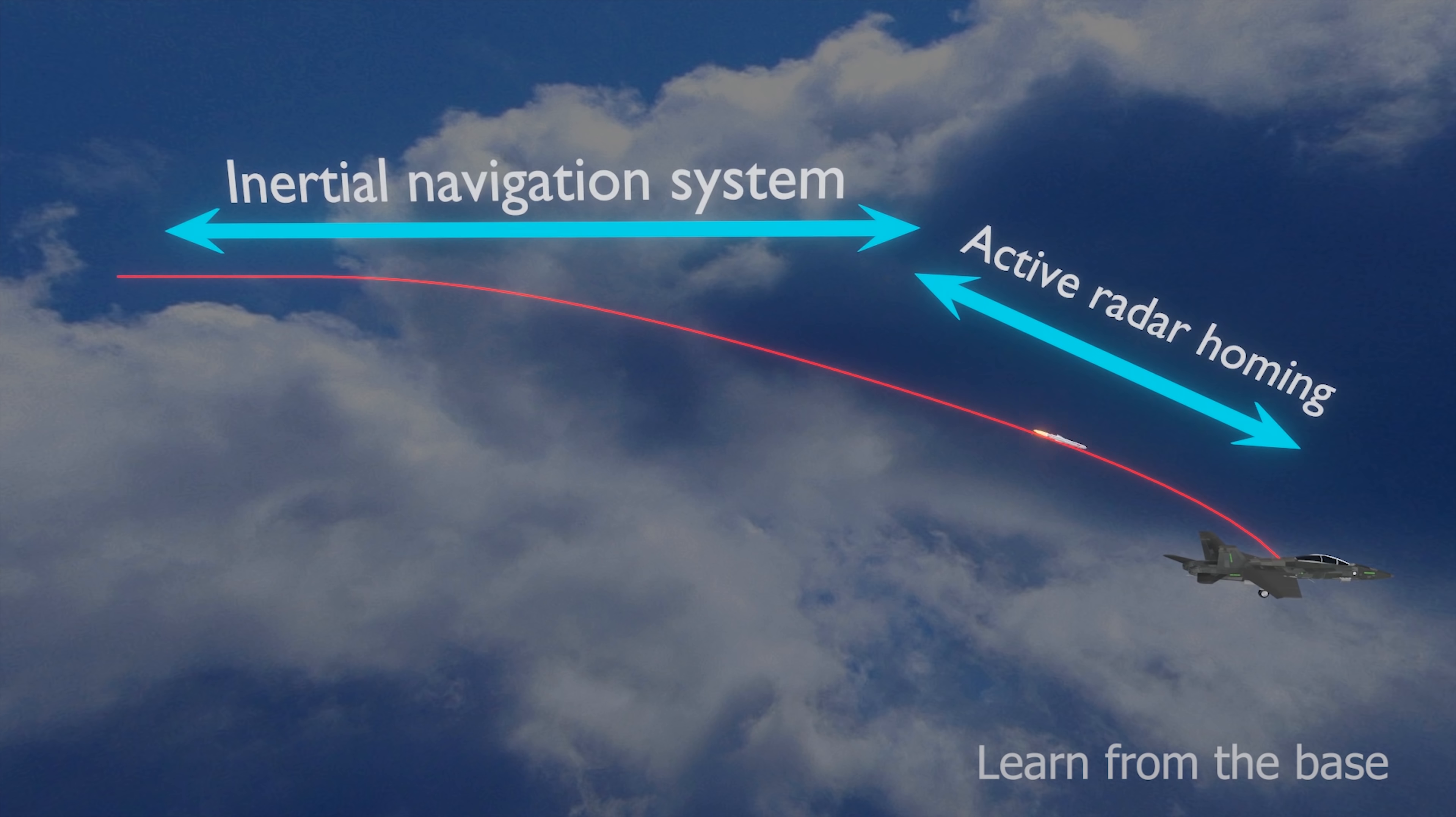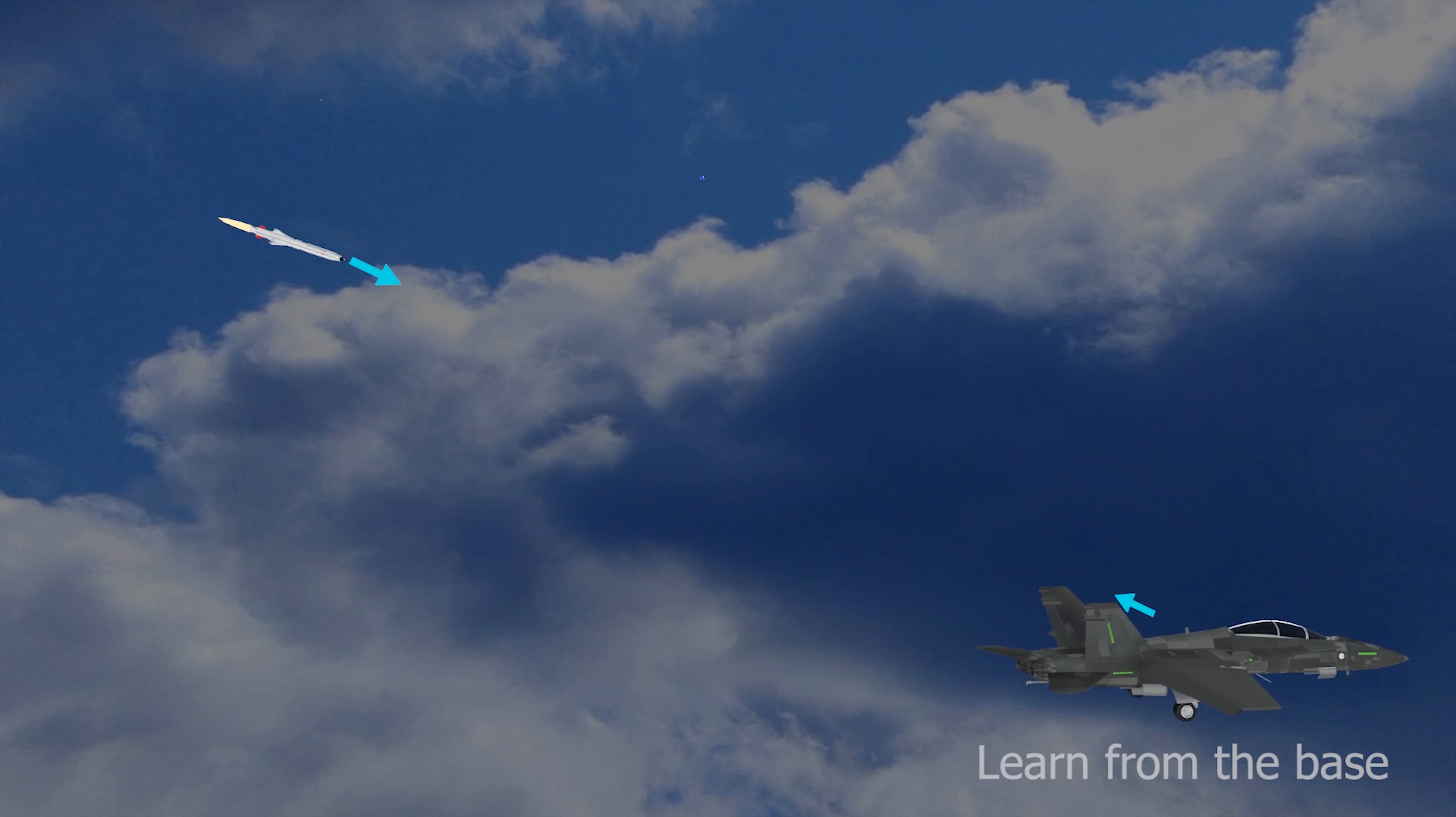Let's see how active radar homing technology works. Active radar homing is a missile guidance method to find and track its target autonomously, in which a missile contains a transmitter and receiver. The missile transmits electromagnetic radiation to the target.